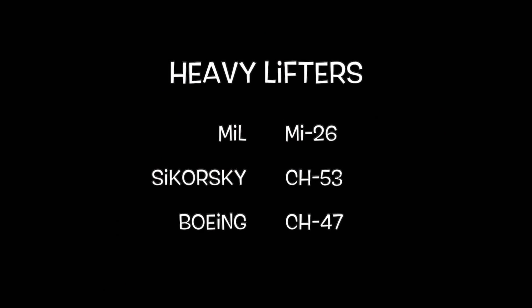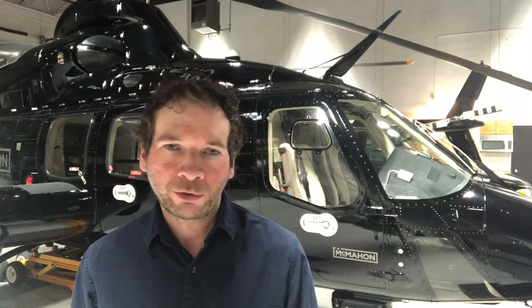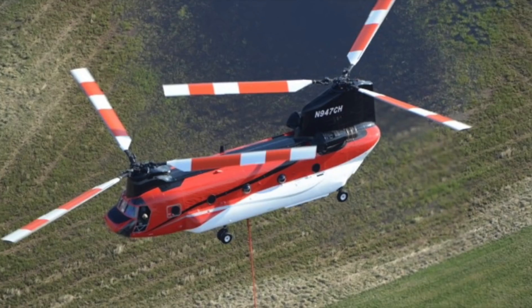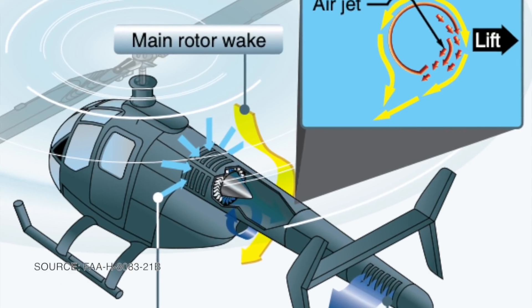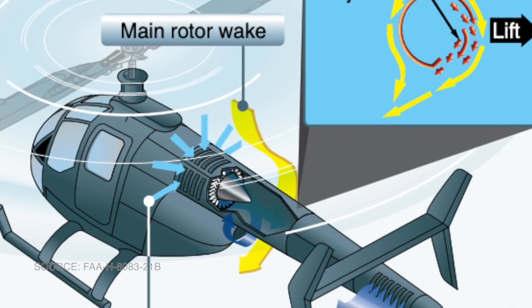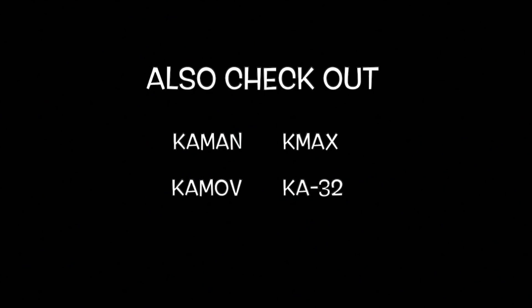There are also unconventional helicopter designs which do not use a tail rotor. These include the Chinook and MD Helicopters' NOTAR system, as well as other designs that use coaxial or intermeshing rotor systems.